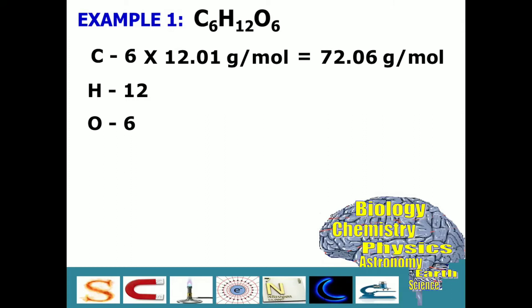How about the hydrogen? Its atomic mass is 1.01 grams per mole. And multiplying it with 12, the result is 12.12 grams per mole.